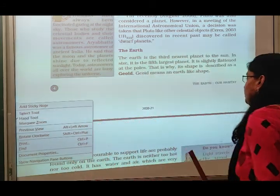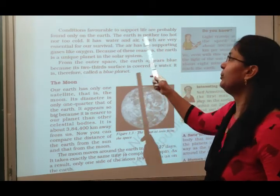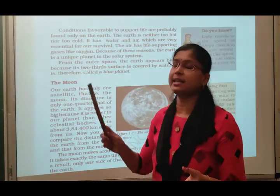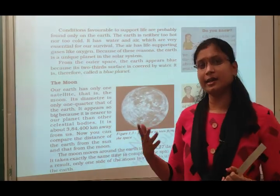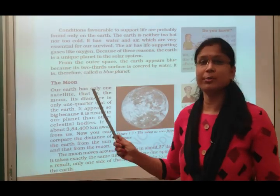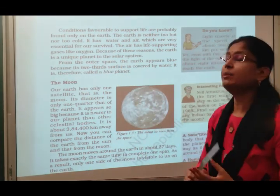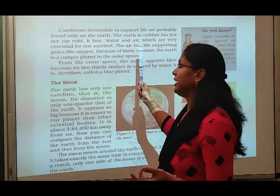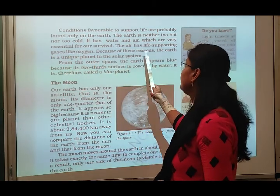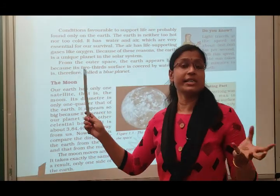Conditions favorable to support life are probably found only on the earth. All the favorable conditions for life — like air, water and other things — are available on planet Earth. The earth is neither too hot nor too cold. It has water and air which are very essential for our survival. The air has life-supporting gases like oxygen. Because of these reasons, the earth is a unique planet in the solar system.